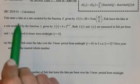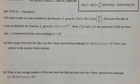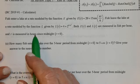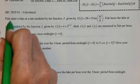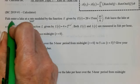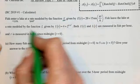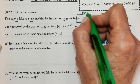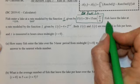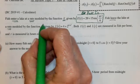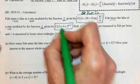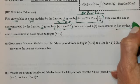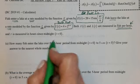Let's take a look at the 2019 problem — number one, calculator active. Fish enter a lake at a rate modeled by function E, the rate in. Fish leave the lake at a rate modeled by function L, the rate out. Both E and L are measured in fish per hour, and time is measured in hours since midnight.